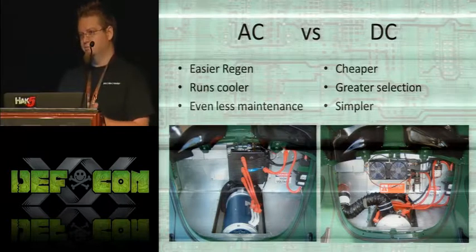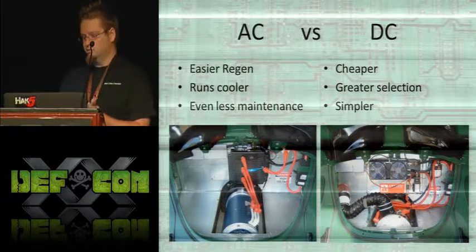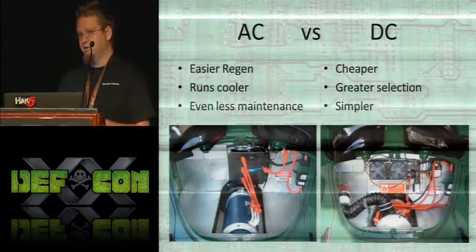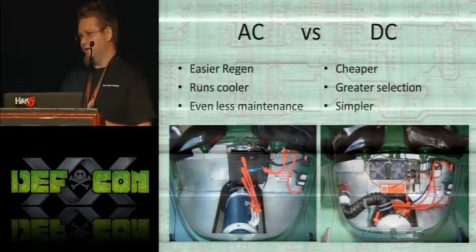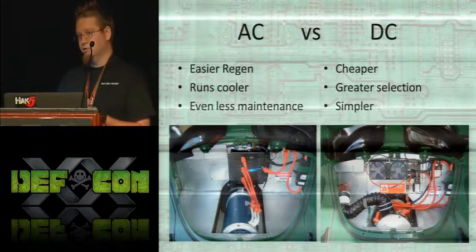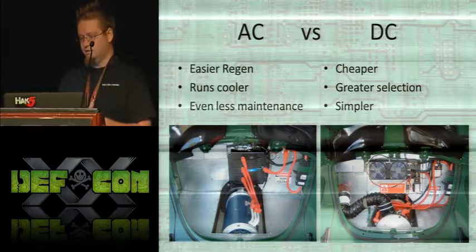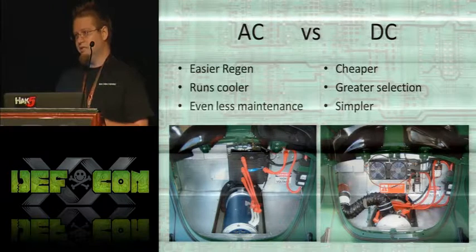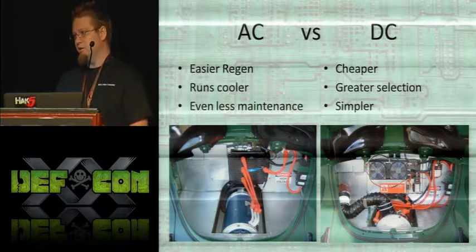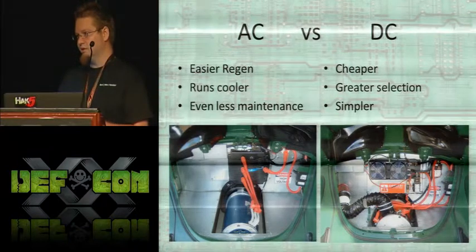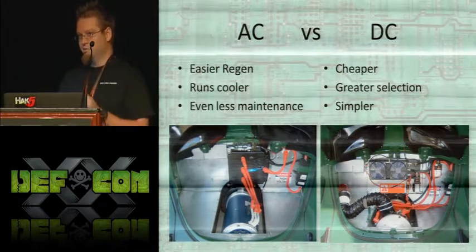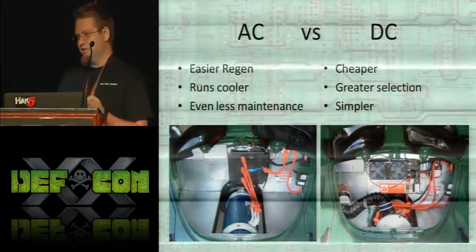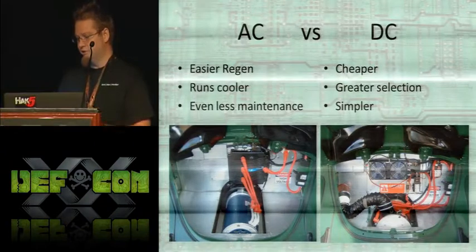AC versus DC: most OEMs use alternating current motors because they have regenerative braking, but regen only gives you about 10 to 30% of your energy back and AC costs a lot more. A typical AC motor and controller combo will be about $5,000, whereas DC will be around $2,000 to $3,000. Most of what you get from regen you could get anyway by just driving smarter. AC motors are also brushless, so unlike the DC motor picture I showed where bearings and brushes wear out, on an AC motor you don't have those brushes — the only thing that can ever wear out is the bearings, and the rest is good for life.